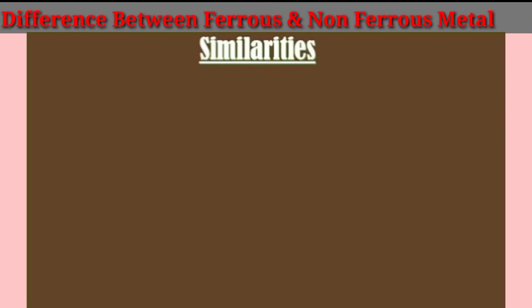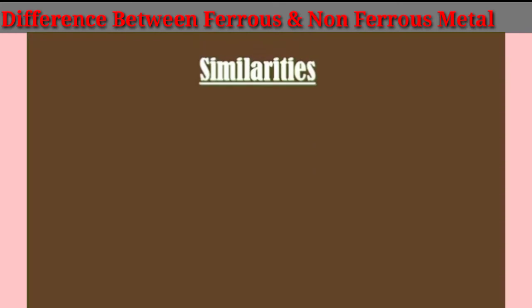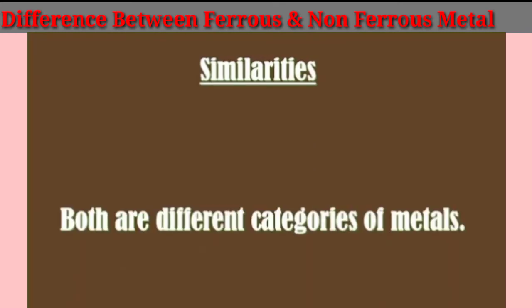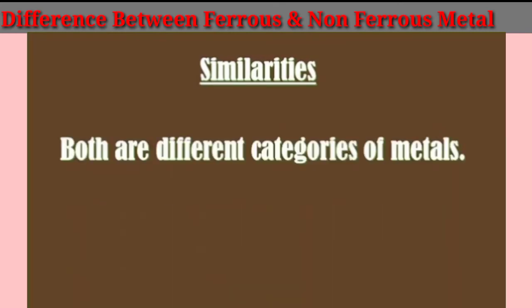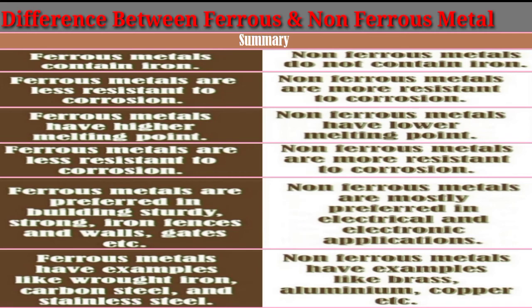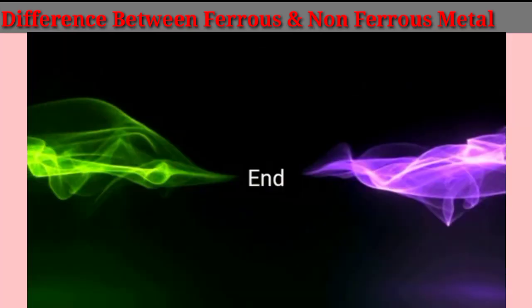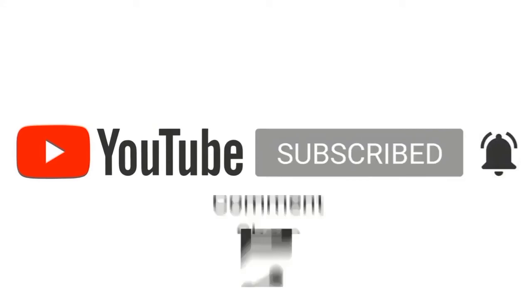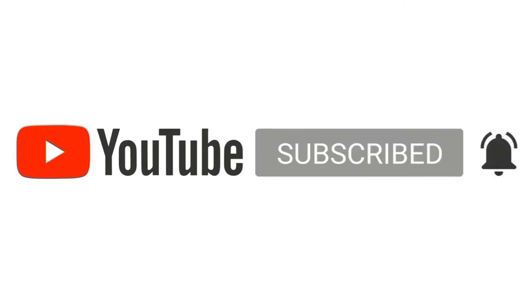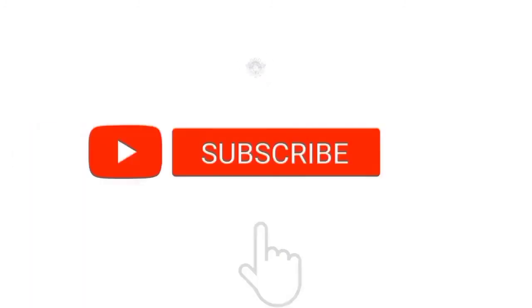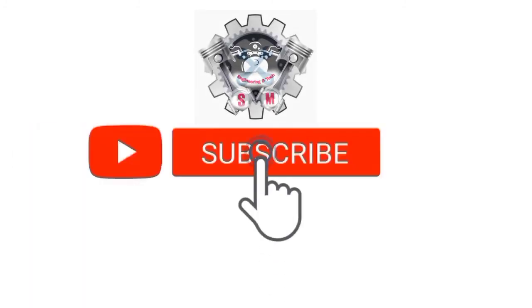Ferrous and non-ferrous metals share the similarity that both are different categories of metals. The difference can be summarized. Hope you understand the difference between ferrous and non-ferrous metals. Then like, share, and comment. Don't forget to subscribe to my YouTube channel.